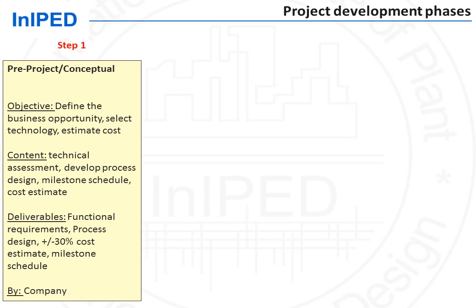The main objective is to define the functional requirements of the project, as well as to obtain a preliminary cost estimate of the investment. This step one is sanctioned by a decision — a decision to go forward into step two or not. Since step two, which will be further refining the technical feasibility of the project, will involve a significant amount of expense. At the end of step one, there is a gate where the decision is taken based on the assessed attractiveness of the project, whether to proceed to step two or not.